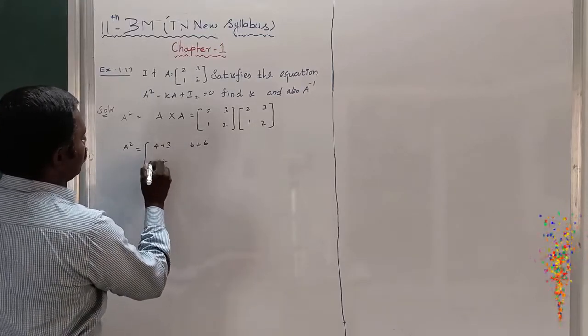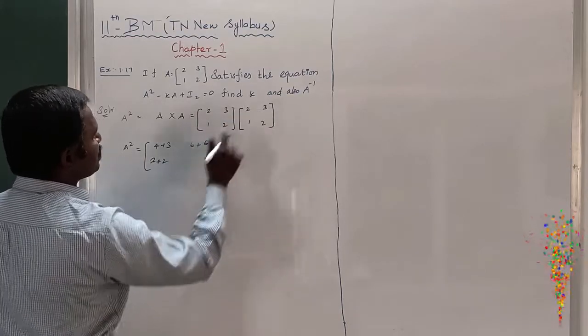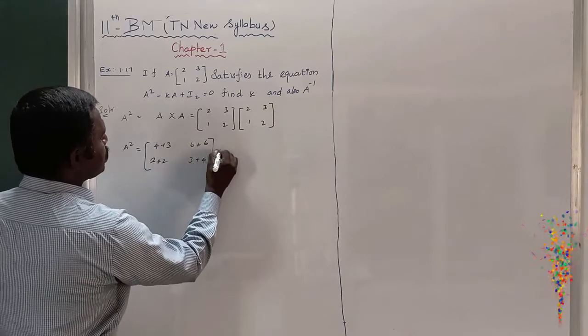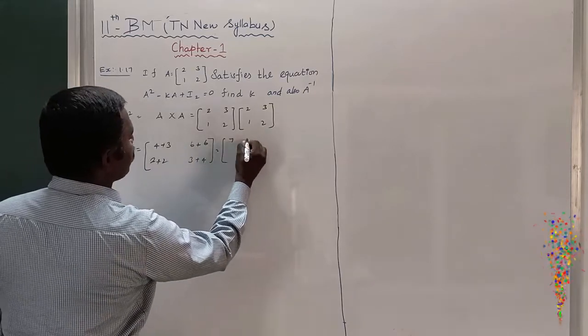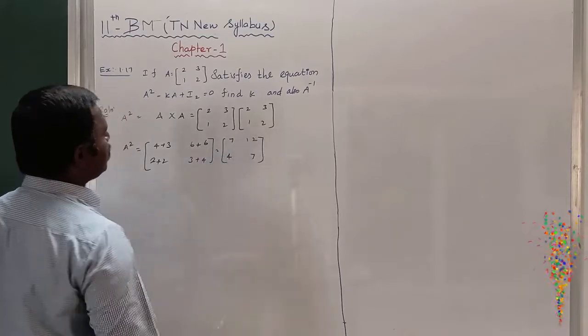1 times 2 is 2. Then 1 times 2 is 2 plus 2. 1 times 2 is 2. 1 times 3 is 3. 2 times 2 is 4. 3 plus 4. Therefore, A² is [[7,12],[4,7]]. This is A².